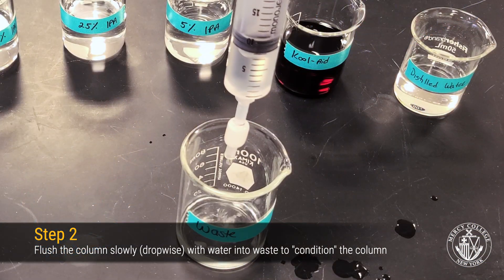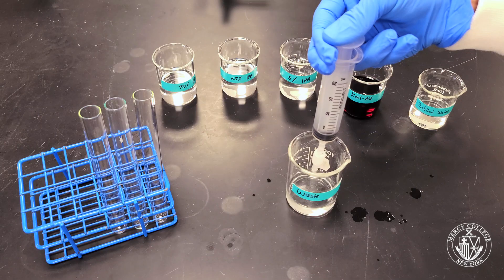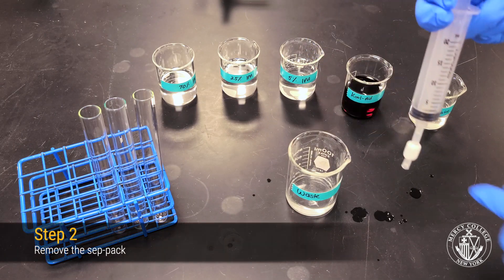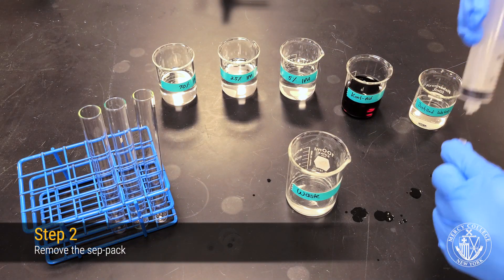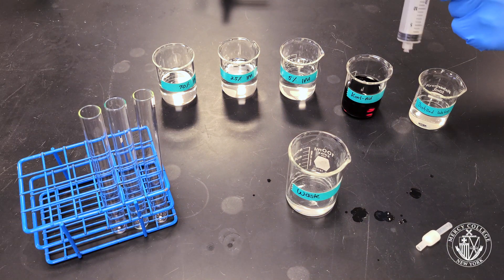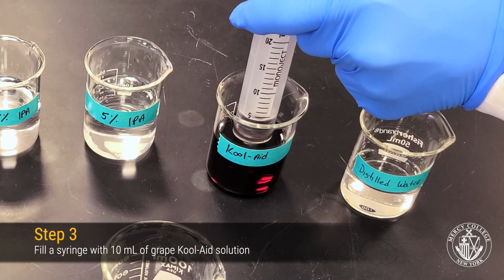Remember to go slowly so that you don't damage the column. Now that you've conditioned your column, remove the CEPPAC cartridge and refill your syringe with 10 mL of your grape Kool-Aid solution.